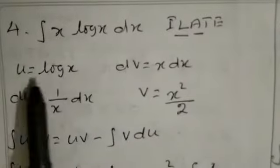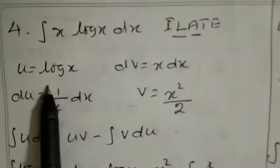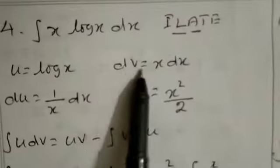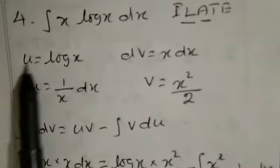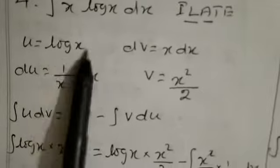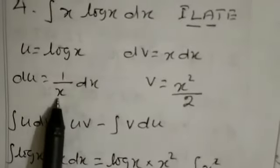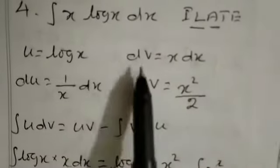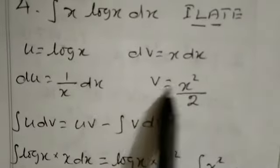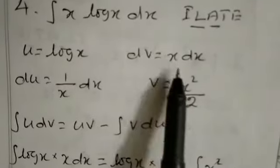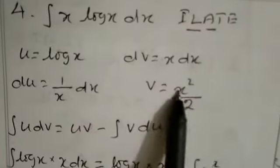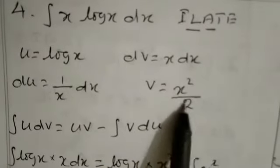Here u equals log x, and then the remaining x into dx we can take for dv. When we are differentiating u, du equals 1 by x into dx. And when we are integrating dv, v equals integrating x — since powers are increasing, that gives x squared divided by 2.